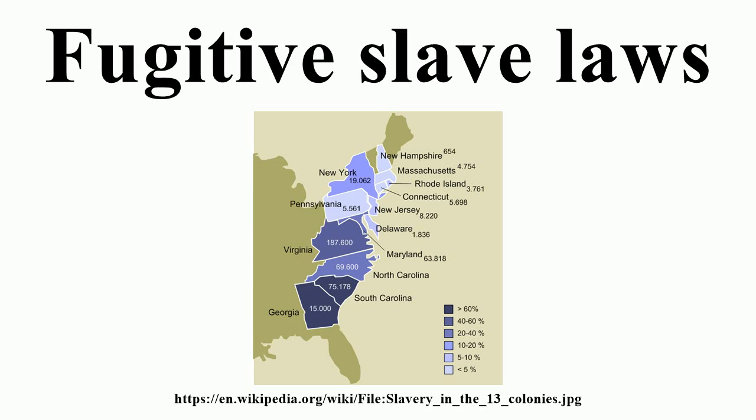Section 3 is the part that deals with fugitive or runaway slaves, and reads in part: Sec. 3, that when a person held to labor in any of the United States, or of the territories on the northwest or south of the River Ohio, shall escape into any other part of the said states or territory, the person to whom such labor or service may be due is hereby empowered to seize or arrest such fugitive from labor, and upon proof before any judge, it shall be the duty of such judge to remove the said fugitive from labor to the state or territory from which he or she fled.